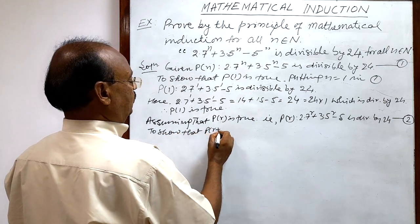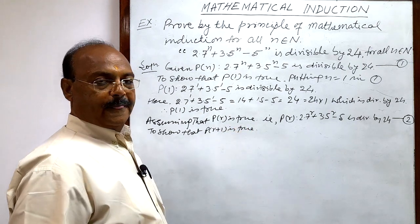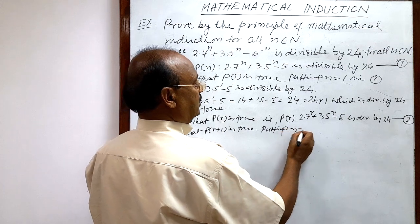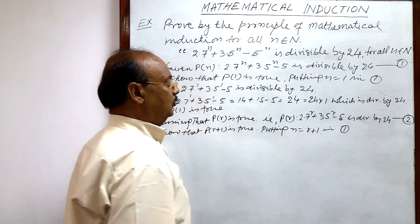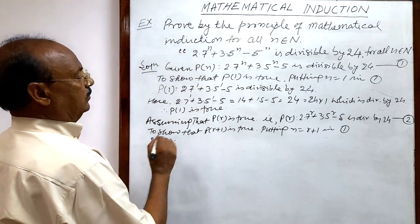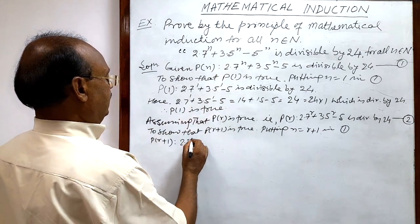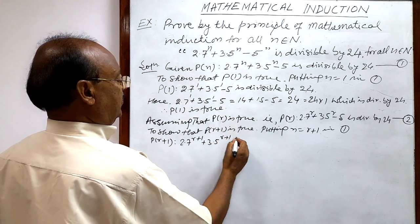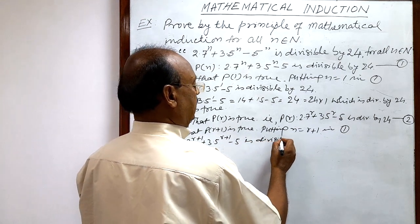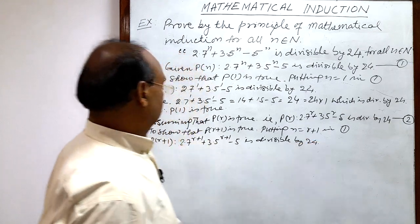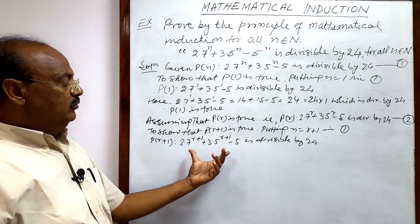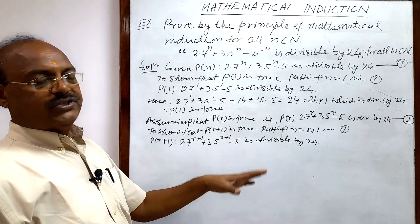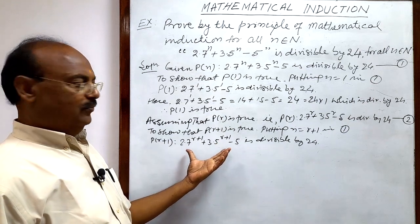Third and last step: we have to show that P(r+1) is true. To get P(r+1), we put n = r+1 in relation number 1. Then P(r+1) is: 2·7^(r+1) + 3·5^(r+1) - 5 is divisible by 24. We have to prove it, so let us start with this expression and show that 24 is a factor.